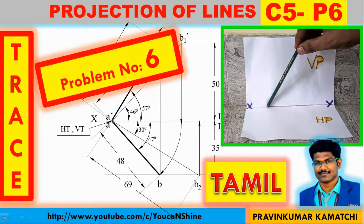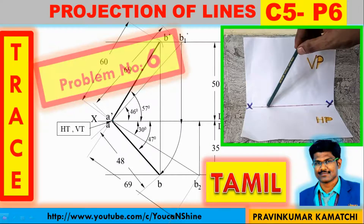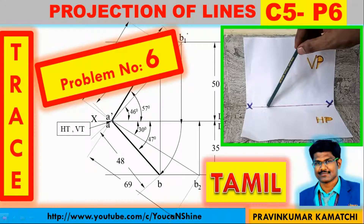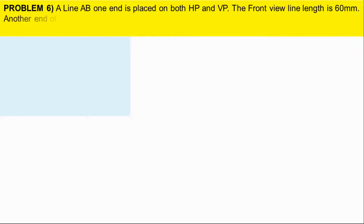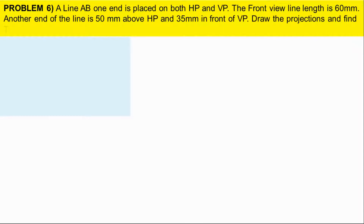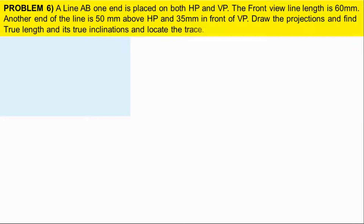Projection of lines, topical problem number 6 — case 5, problem 6. The problem: line AB, one end is placed on HP as well as VP. The front view length is 60mm. Another end of the line is 50mm above the HP and 35mm in front of the VP. Draw the projections and find the true length, true inclinations, and locate the trace.